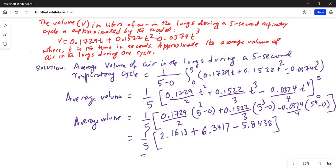So, this is 1 fifth times the term in the parenthesis is 2.1613. 2.1613 plus 6.3417 minus 5.8438. And that is equal to times 1 fifth times 2.6592, which is equal to 2.6592 divided by 5. And the answer is 0.5318 liters.